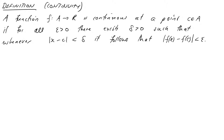Here is the definition of continuity. You'll notice it looks extremely like the definition of the limit of a function, or at least the epsilon-delta version of it, so we'll highlight some differences as we go through. We have a function f that takes some domain A onto the real numbers, and we say it's continuous at a point c in the domain of A if for every epsilon greater than zero there exists a delta greater than zero such that whenever |x − c| < delta it follows that |f(x) − f(c)| < epsilon.